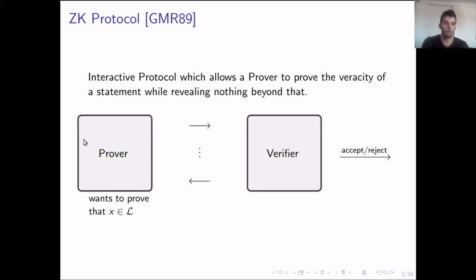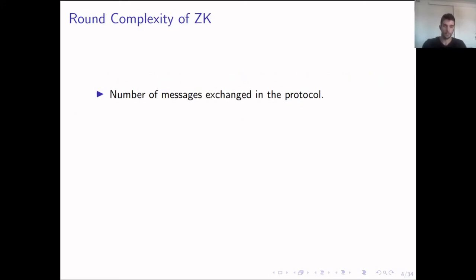So let's say we have a prover that wants to prove that X is in the language, and if we assume he has a witness W, we want for the verifier to learn nothing about the witness. A very well-studied problem concerning zero knowledge is the number of messages exchanged in the protocol, or in other words, the round complexity of the protocol.